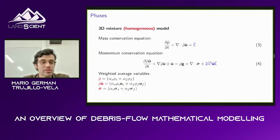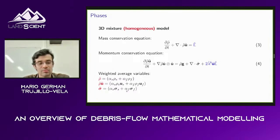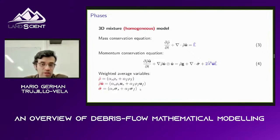Mixture model elements use weighted-averaged variables. For example, the density ρ or the momentum ρu (density by velocity vector). The stress tensor is written as the volume fraction α multiplied by the soil stress tensor plus the volume fraction of the fluid multiplied by the fluid stress tensor. A single-phase model is obtained simply by suppressing one of these terms.